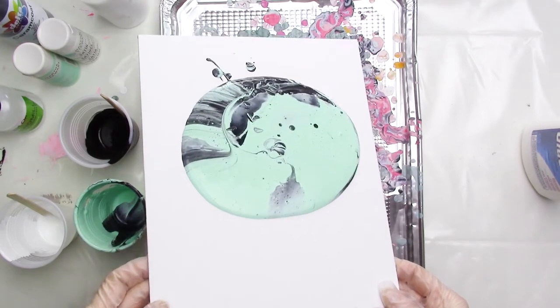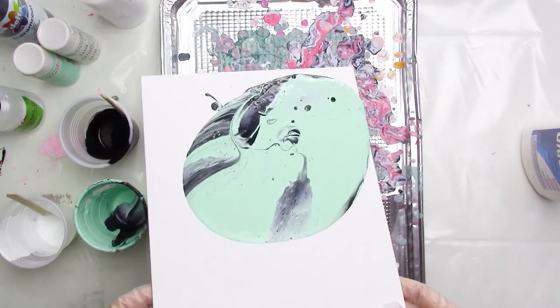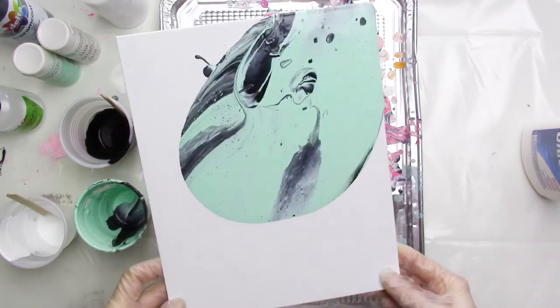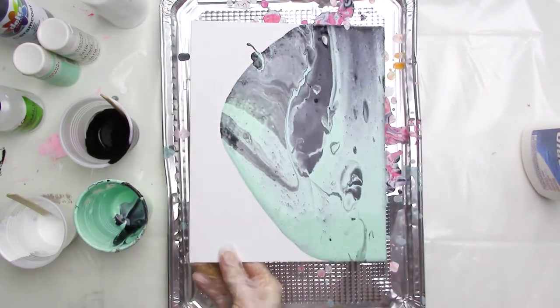I'll start tilting the panel around to get the paint moving, and I can already see a few cells, but nothing too big at this point. I'm also not seeing much white paint at all.